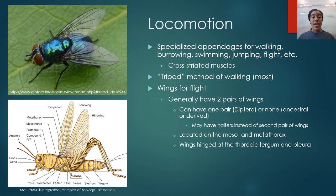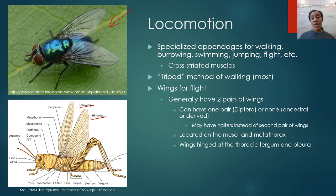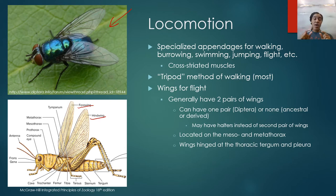Insects also have wings. Most insects have two pairs — one pair of forewings and one pair of hindwings. Some insects, like the true flies belonging to order Diptera, only have one pair of wings. There are also insects that lack wings altogether, either as an ancestral characteristic or a derived one. Insects that have only one pair of wings often have halteres at the back — nub-like extensions where the second pair of wings would have been — which they use for stabilization and equilibrium during flight.